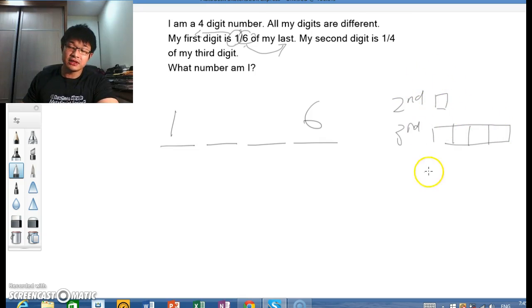Now we have to go into the process of elimination. If the second digit is 1, the third will be 4. Can this be the case? No, because we already have the first digit taken up by 1. So we can't have this.